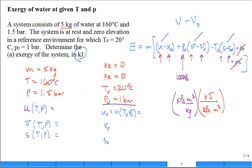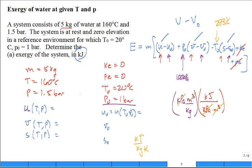Remember that conversion factor: one kilojoule equals one kilopascal times one meter cubed. The units for entropy work out similarly. For T0, don't put in 20 degrees C. Look at the units of S - kilojoules per kilogram-Kelvin - so put in T0 as 293 Kelvin. Good to five significant figures, 273.15 + 20 = 293.15 K, but three significant figures is usually sufficient for temperature conversion. Then you can make the computation.